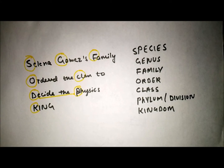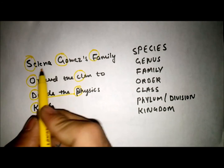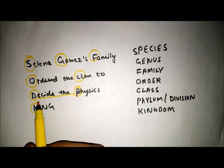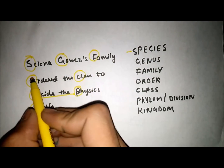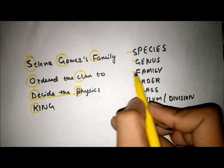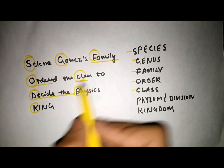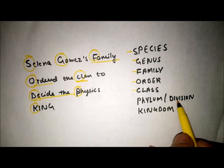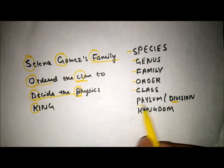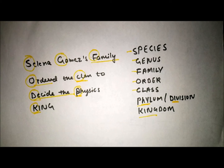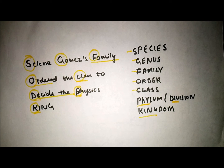S for species, G for genus, F for family, O for order, C for class, D for division, P for phylum, and K for kingdom. That's it — so I hope you will never forget. This is a very short and easy trick: Selena Gomez family ordered the clan to decide the physics king.